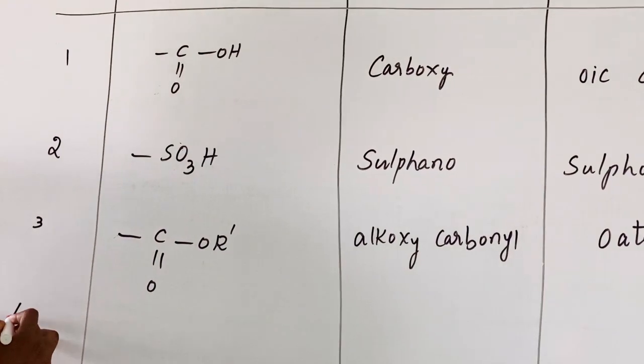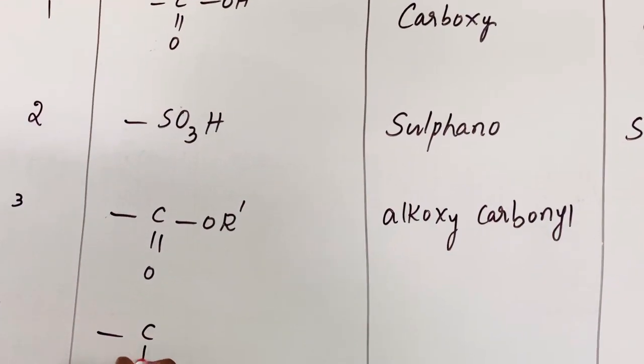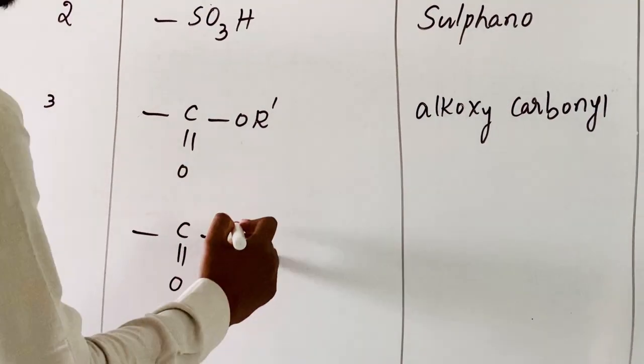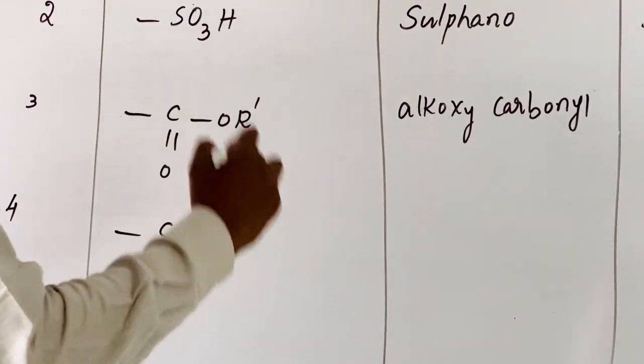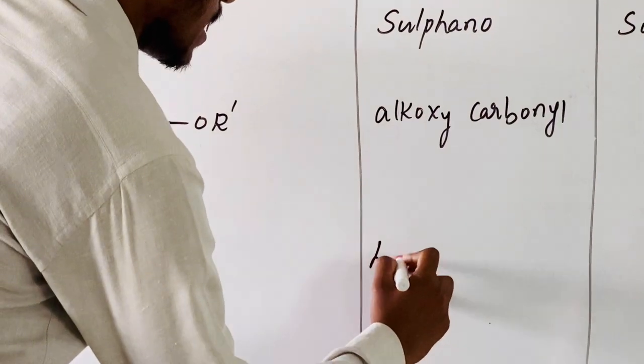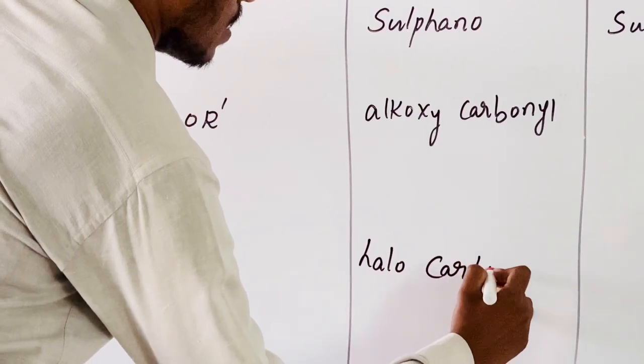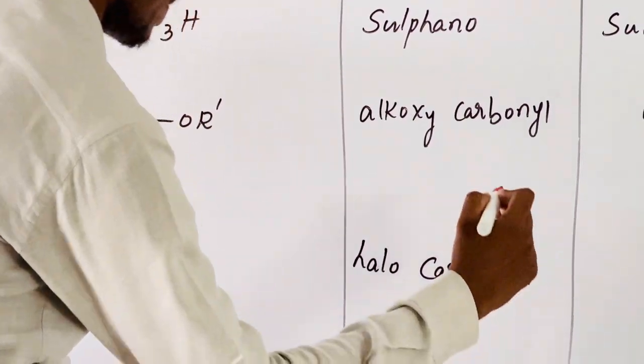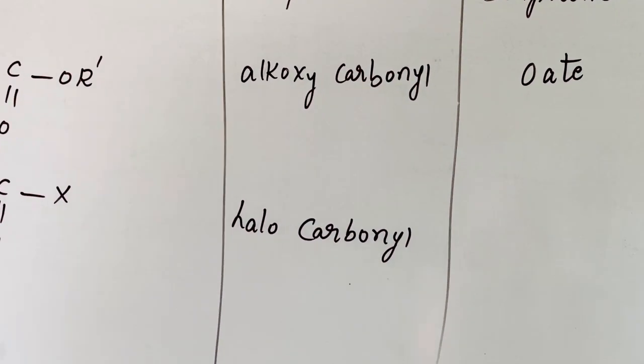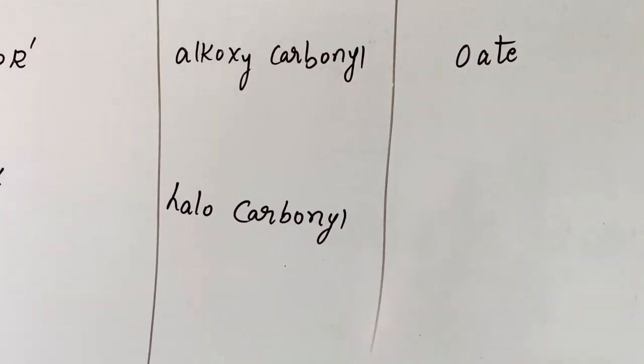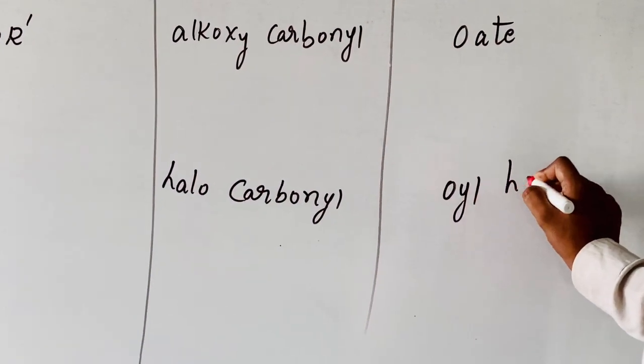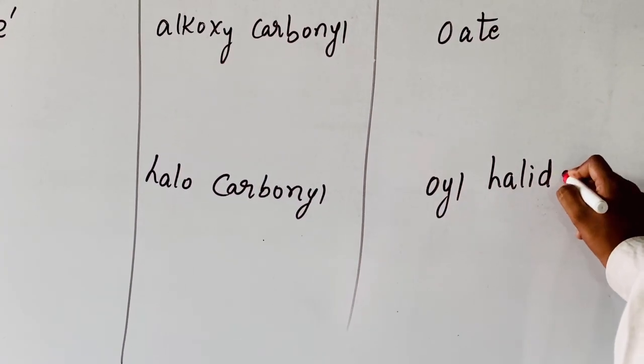Now coming to its derivative: R-C-O-X. In case of O-H, it is replaced with X, a halogen. Then it is called halo carbonyl. Secondary suffix is O-yl.